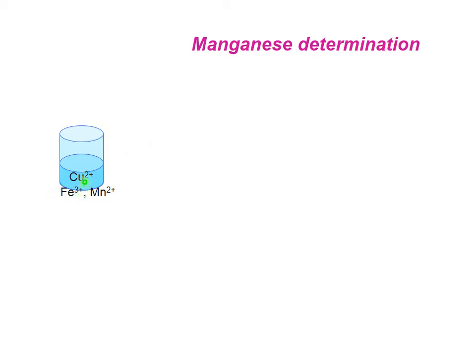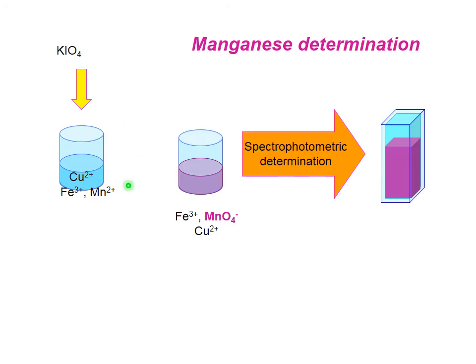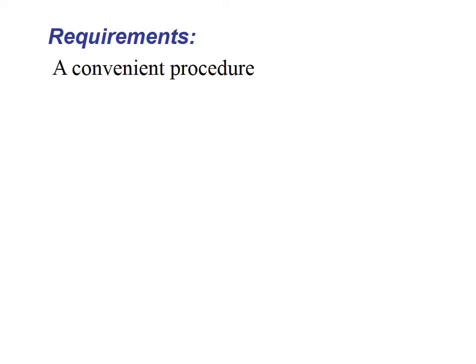Another example: I have iron, copper, and manganese ions in solution. In the beaker I add potassium iodate and a warm solution. As a result, permanganate forms, which has a characteristic purple color. I can put this purple solution in a cuvette and perform spectrophotometric determination by measuring absorbance.